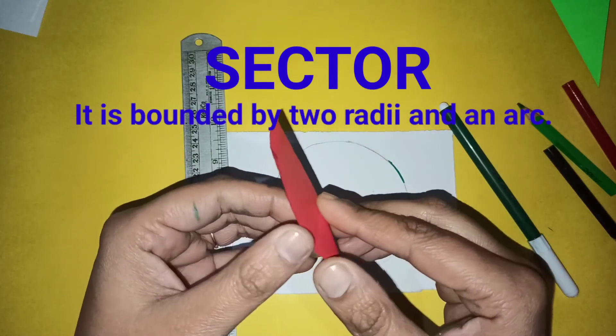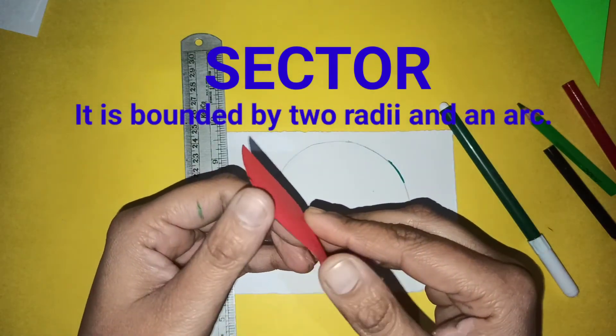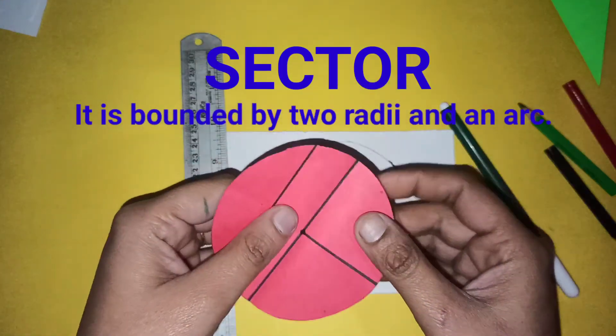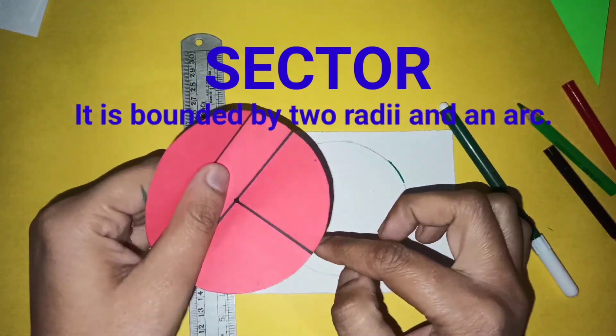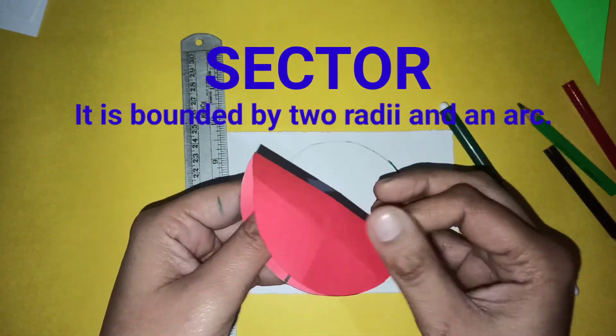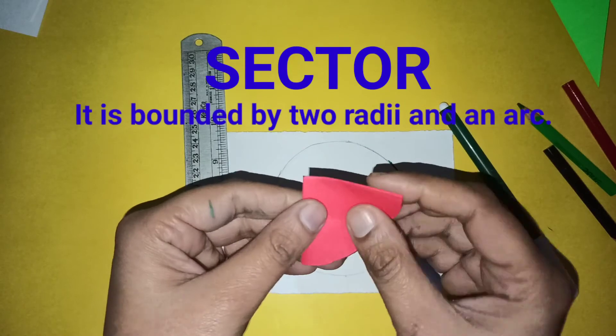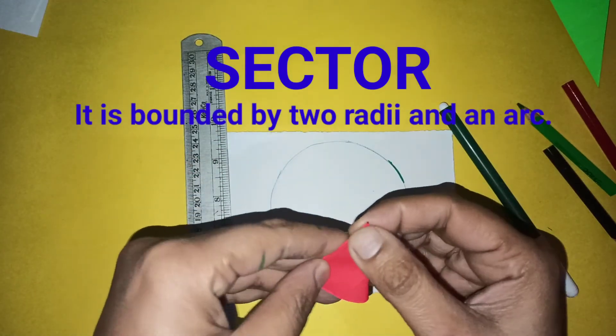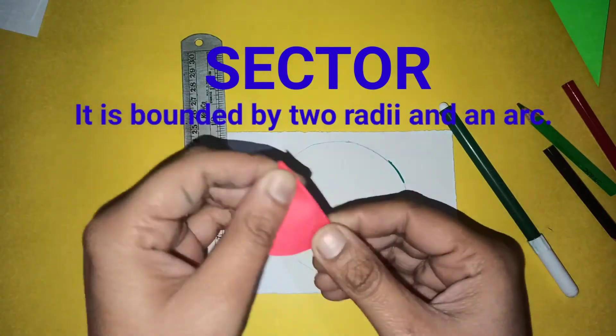So any part which is cut from the center, where its edges are cut touching the center, is known as the sector. It can be made in any way. See if I half it. This is also a sector.